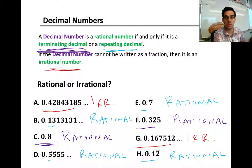A decimal is rational if it is a terminating decimal or a repeating decimal. A terminating decimal is a decimal that ends at some point. For example, C and F are terminating decimals. 0.8 and then it terminates or ends. 0.325 and then it terminates or ends. So those are rational because they are terminating.